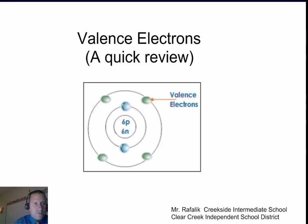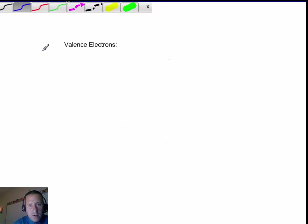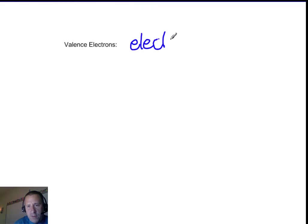Valence electrons, first off, what are they? Valence electrons are the electrons that you found in the outermost shell of an atom. Electrons found in the outermost shell of an atom.